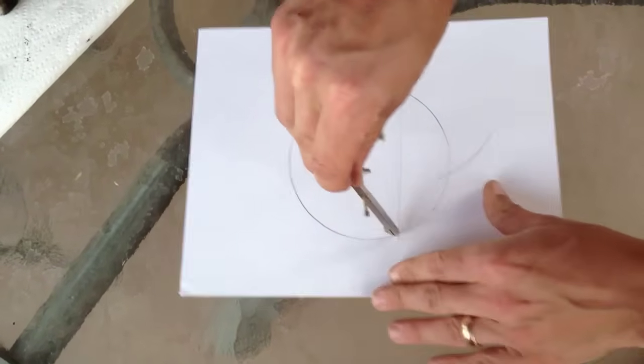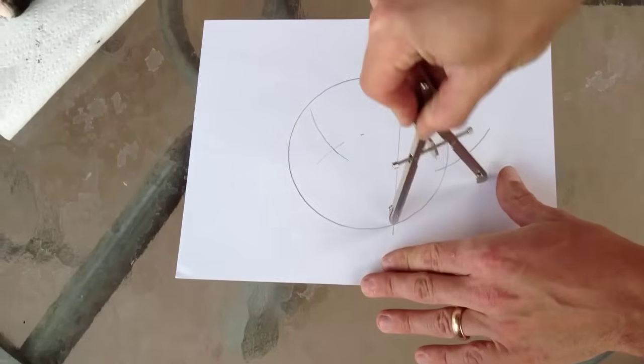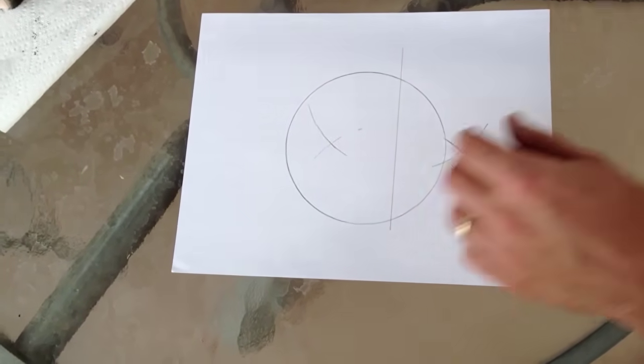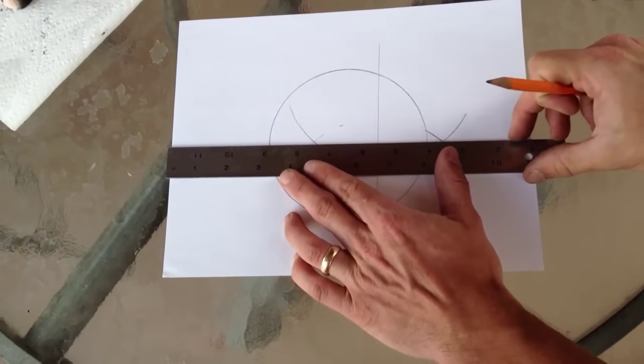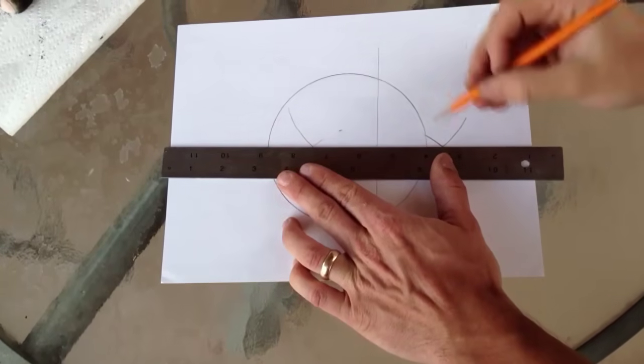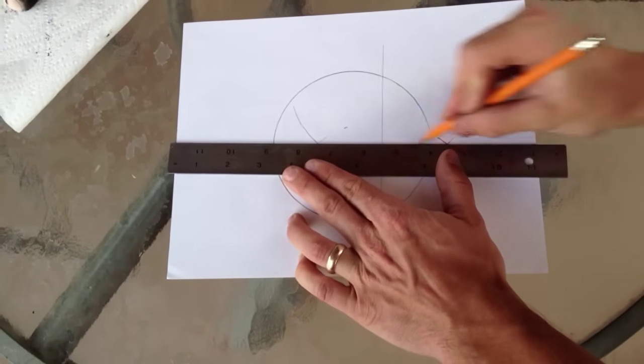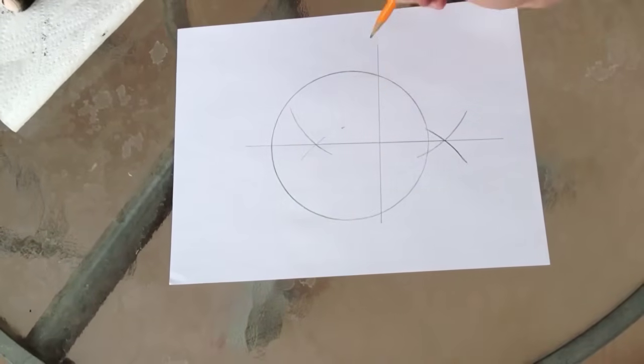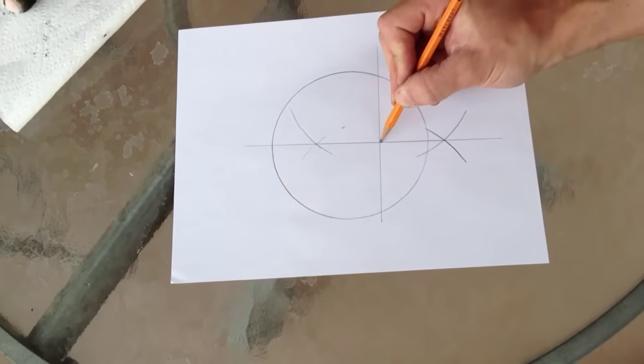Repeat this on the other point. This gives you two points. And when you draw a line through that, you have a line that's perpendicular to your cord going directly through the center.